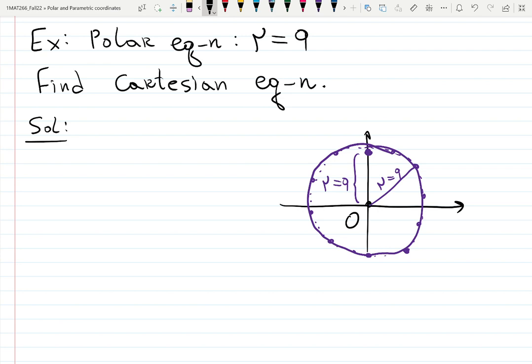So if we want to jump from polar to Cartesian, I gave you the formulas. x squared plus y squared equals r squared. R is given. That's an equation, by the way. r equals 9 is an equation.